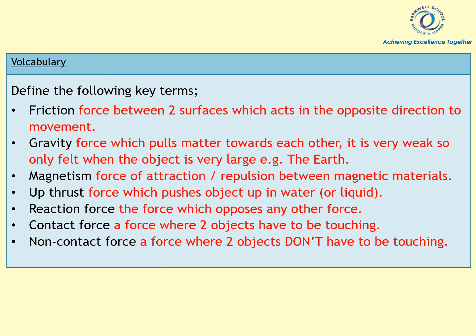Okay, here are the answers to those terms. Friction is the force between two surfaces and it acts in the opposite direction to the direction of movement. Gravity is the force which pulls matter towards each other — it's very weak so it's only felt when the object is very large, like the Earth. Magnetism is the force of attraction or repulsion between two magnetic materials. Upthrust is the force which pushes an object up in water or a liquid — only use this answer if the object is in a liquid. Reaction force is the force which opposes any other force. A contact force is where two objects have to be touching, and with a non-contact force the objects don't have to be touching.